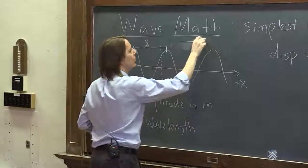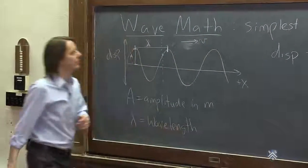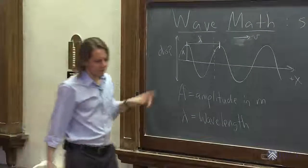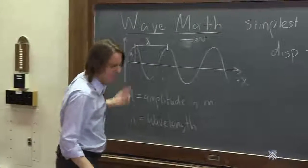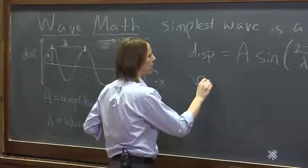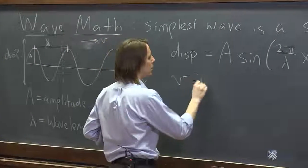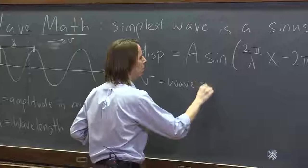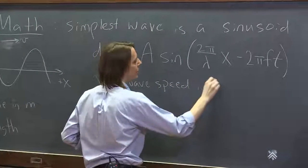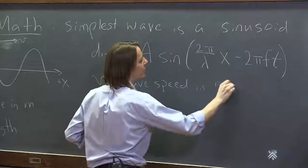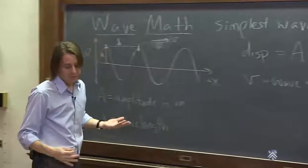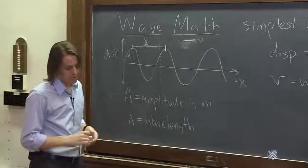There's also the velocity v — that's just the wave speed: how fast it travels down the medium. In MKS units for this wave it would be in meters per second. It's just a speed like any other speed.